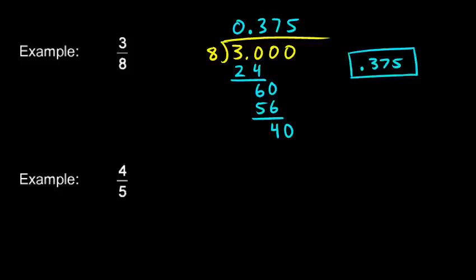And then in the next example, 4 fifths, 4 divided by 5. So let's set that up and do the division. I'll say 4.0 divided by 5, and one decimal place here, it turns out, will be enough. 4, well 5 won't go into 4, so I'm going to have a 0, and I have a decimal here.